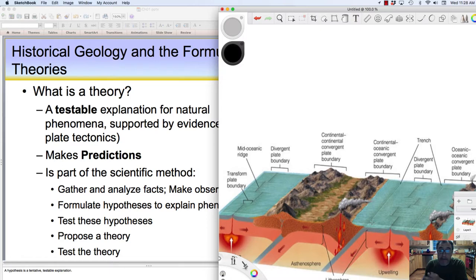So that's the plate tectonic theory, and that's testable. The prediction is if we drill or look for fossils farther from the ridge, they should get older. If we go to the mid-oceanic ridge, we should see volcanoes and lava pouring out of the seafloor.